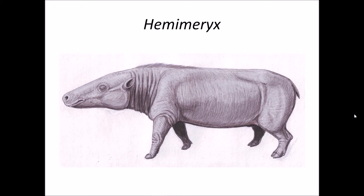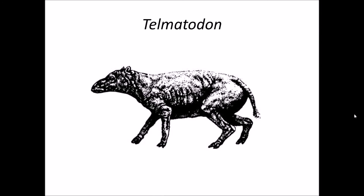Hemimarex were hippopotamus-like creatures and we put them in the family Anthracotheridae. Anthracotheridae is a family which includes hippopotamus-like creatures. Telmetodon was also a hippopotamus-like creature but much smaller in size, and we are not sure whether they used to live in water or not. Telmetodon also belongs to the family Anthracotheridae.